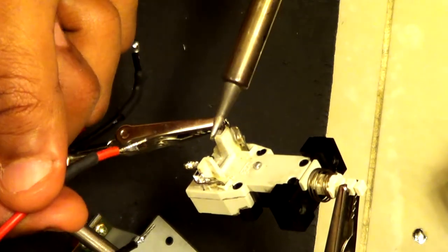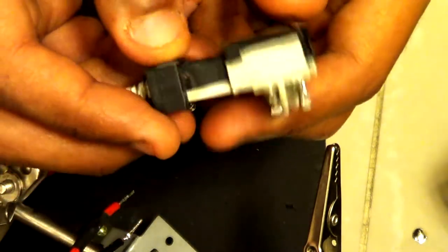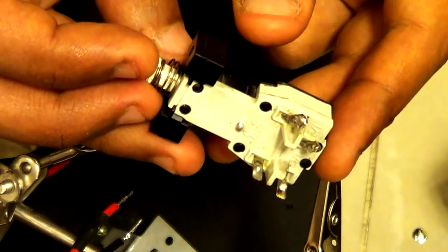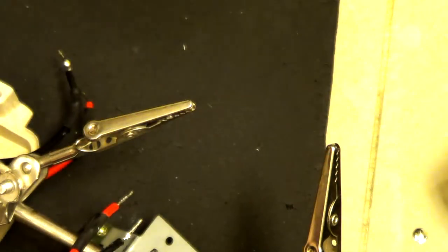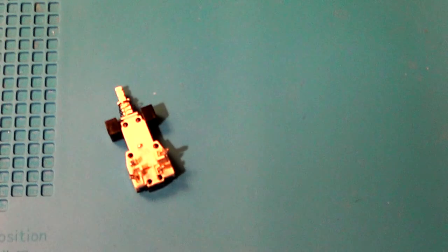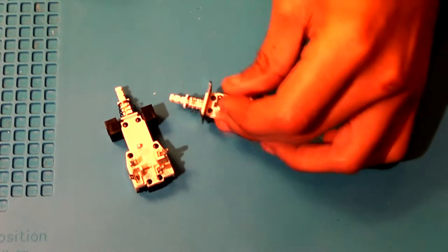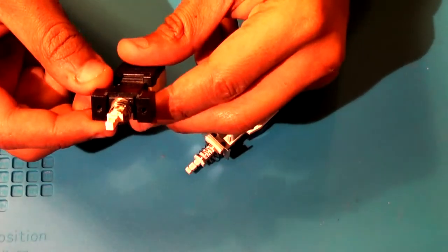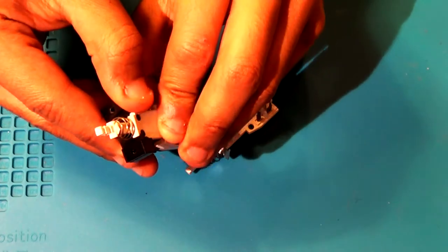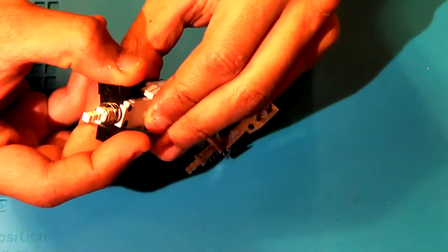After desoldering, we now have successfully removed our old damaged power switch. So it is time to replace it with a new one. But before we do that, we need to remove one essential piece from the old damaged power switch. Here we have our old damaged power switch, and here is our new one. You see that the old power switch, there is a black plastic holder piece. We need to go ahead and remove that and apply it to the new power switch.